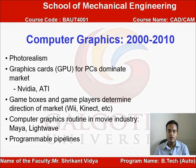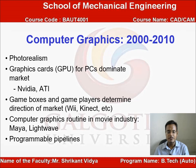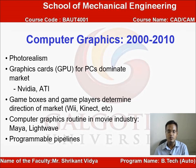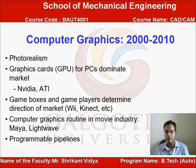After 2000, photorealism advanced and graphics cards for PCs dominated the market — companies like NVIDIA and ATI came into picture. Game consoles and game players drove the market direction for computer graphics. In the movie industry, the use of computer graphics at a high level became standard, with software like Maya and LightWave used for animation, pictures, and cartoons. Programmable pipelines came into picture, and the CAD industry benefited the most after 2000.